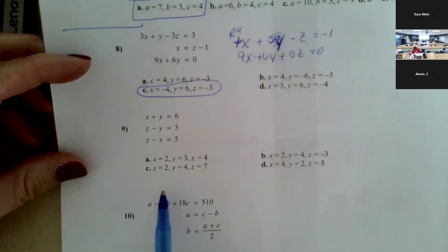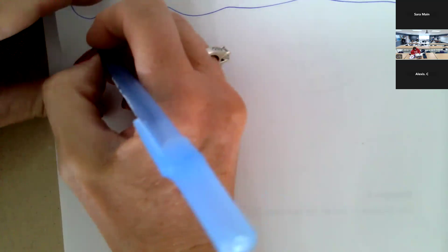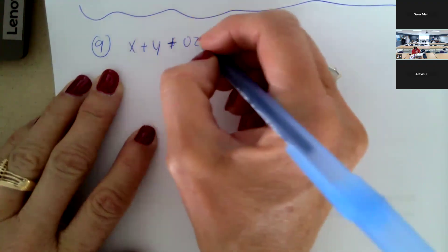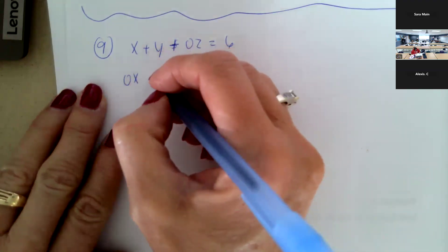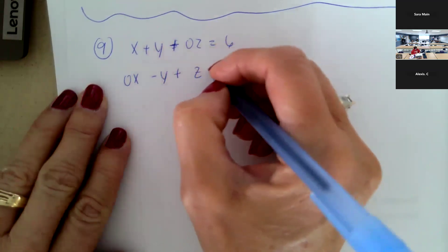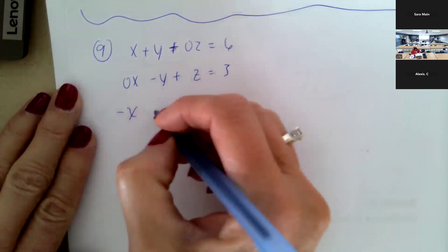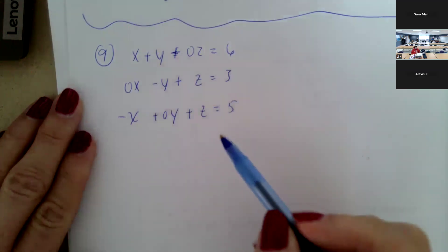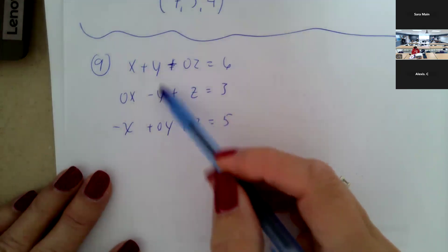Let's look at number nine. We have x plus y, and I'm going to put in a zero z equals six just to have a place value for all the letters. Row two is zero x minus y plus z equals three, lining them all up. Then row three is negative x plus zero y plus z equals five. That way I can better assess what I'm working with. I'm going to add row one and row two because the y's are already opposite signs, so I can eliminate y.